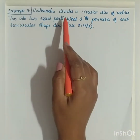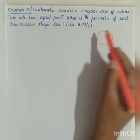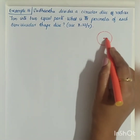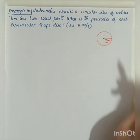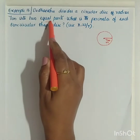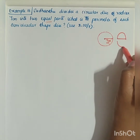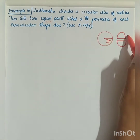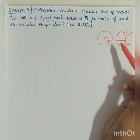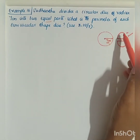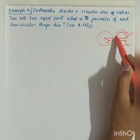What is given? Sudhanshu divides a circular disk. Imagine if this is the circular disk. Radius is also given — r is equal to 7 cm. He divides it into two equal parts, so this will be the first part and this will be the second part. What is the perimeter of each semicircular shaped disk?